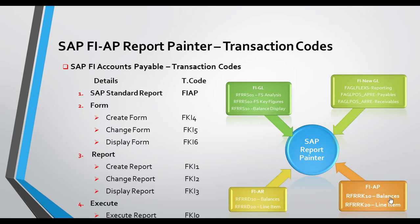For reports, you can create a report using FKI1, change it using FKI2, display it using FKI3, and execute the report using FKIZ. These are all the transaction codes relating to the FIAP Report Painter.